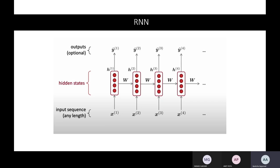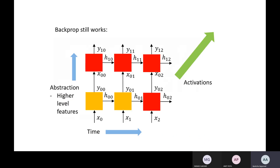All weights are shared across time steps. There are two types of weights: one from the current input and one from the previous activations from previous time steps, plus a bias — so three parameters total. You can stack multiple layers, and the final layer would be a softmax output layer.